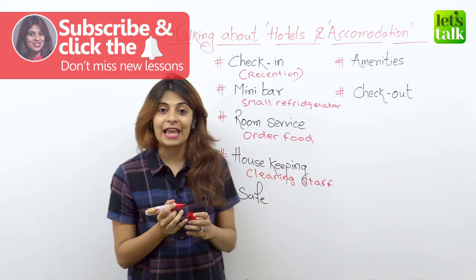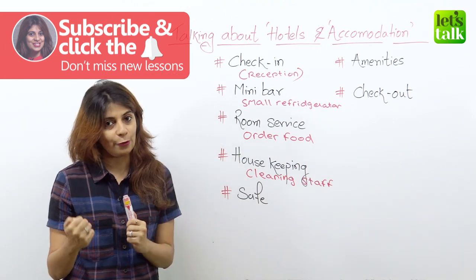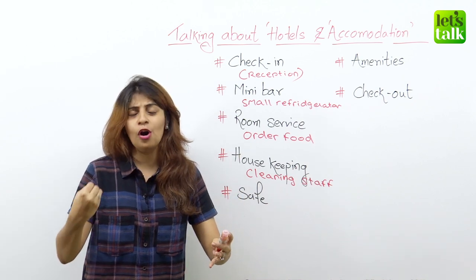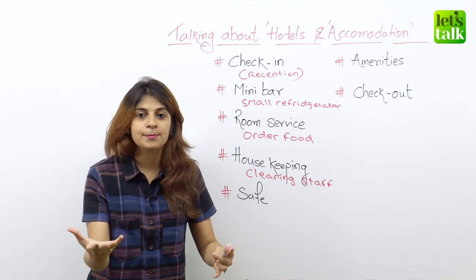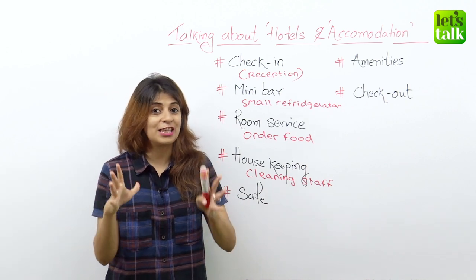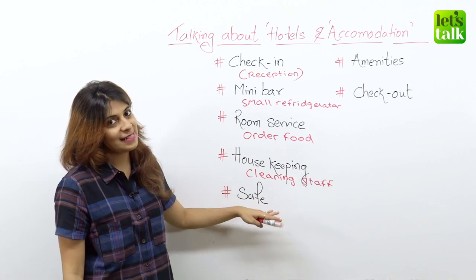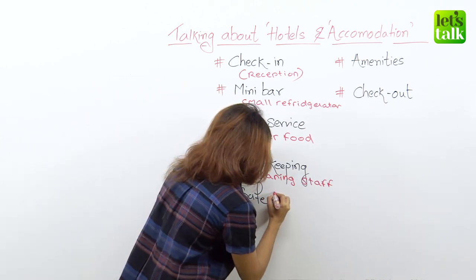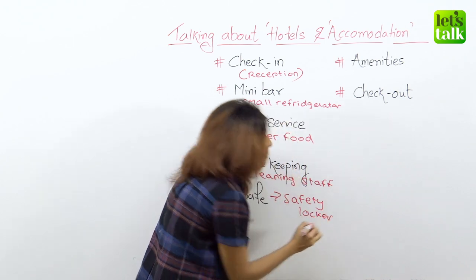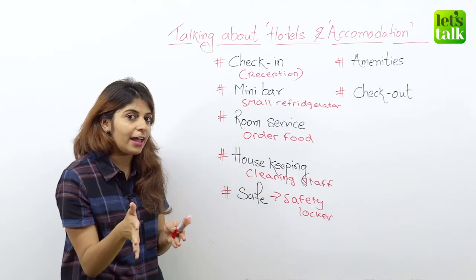We also have a safe. A safe is something you will find in the closet or wardrobe of a hotel room — it's a small safety locker. So if you are carrying a lot of money, your passport, or a lot of jewelry and you would like to keep it safe, you can use the safe that the hotel provides. Remember that not all rooms or all hotels provide these things, so you have to check before making reservations.